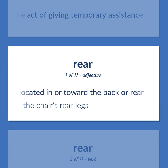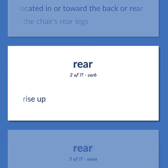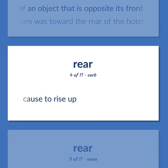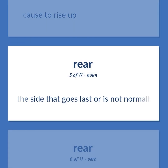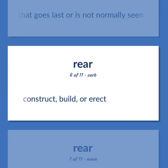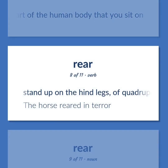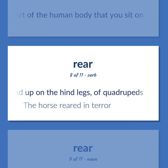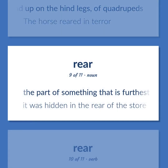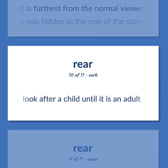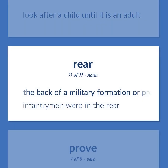Rear. Located in or toward the back or rear — the chair's rear legs. Rise up. The side of an object that is opposite its front — his room was toward the rear of the hotel. Cause to rise up. The side that goes last or is not normally seen. Construct, build, or erect. The fleshy part of the human body that you sit on. Stand up on the hind legs of quadrupeds — the horse reared in terror. The part of something that is furthest from the normal viewer — it was hidden in the rear of the store. Look after a child until it is an adult. The back of a military formation or procession — infantrymen were in the rear.